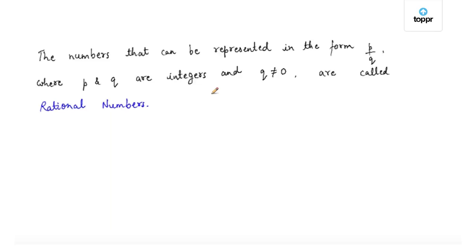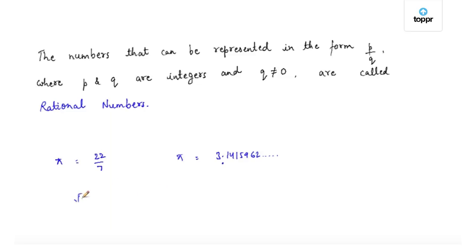But can you think of a number which cannot be represented in the form p by q? How about pi? Can you represent pi in the form p by q? No, we cannot. Similarly, root 2, root 3, or any other non-perfect square number can also not be represented in the form p by q. So the numbers that cannot be represented in the form p by q are called irrational numbers.